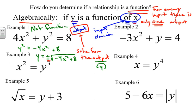In example two, we solve for Y. We add 3x² to the other side and get Y = 3x + 4. For every input there is one output — just one value, no plus or minus. So yes, this is a function. One input, one output relationship.